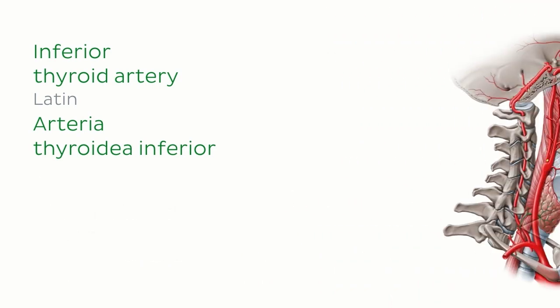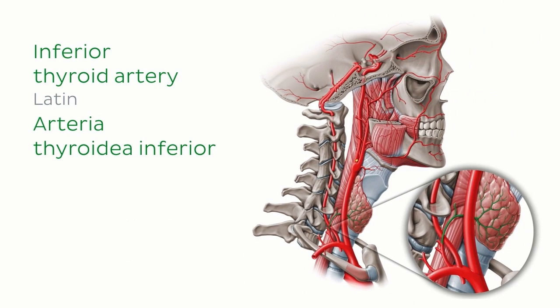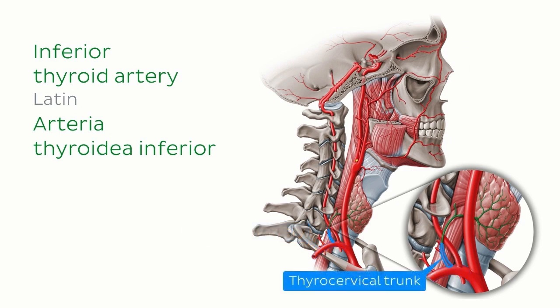Back to this lateral view of the head and neck, we can see the subclavian artery and the thyrocervical trunk arising from it. The inferior thyroid artery is highlighted in green, branching from the thyrocervical trunk and travelling towards the thyroid gland.